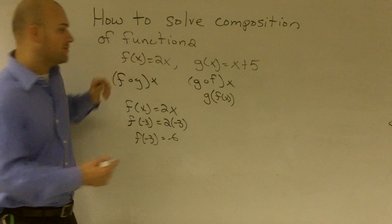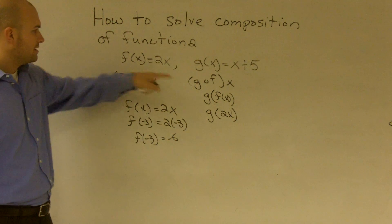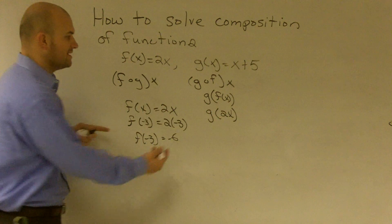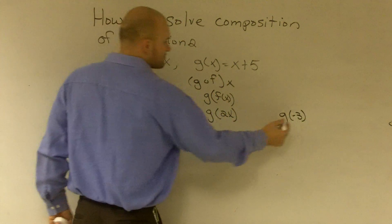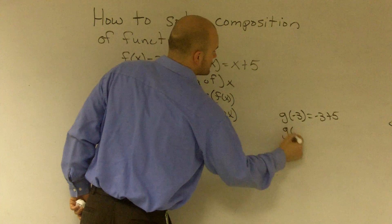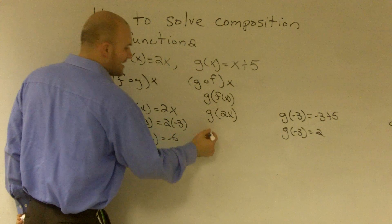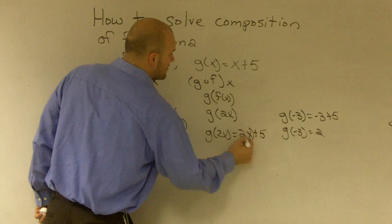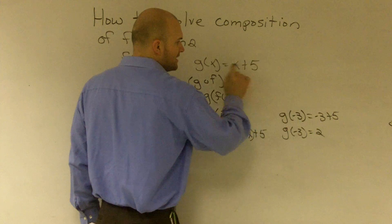In this problem, f of x represents 2x. So essentially, g of f of x becomes g of 2x, because f of x is 2x. Finding g of 2x is the same as finding g of negative 3, which in this problem would be negative 3 plus 5, giving g of negative 3 equals 2. Over here, g of 2x equals 2x plus 5 — you plug in 2x for x, just as you plugged in negative 3.